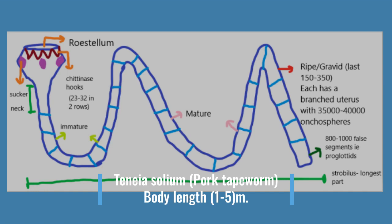All tapeworms are very similar in structure. There are three big parts: scolex, neck, and strobila. In this diagram, the scolex has the rostellum, hooks, and suckers. Below is the neck portion, and strobila is the longest part. The strobila contains oncospheres — also called hexacanth — meaning this is the further generation.